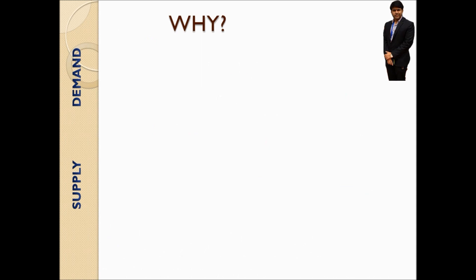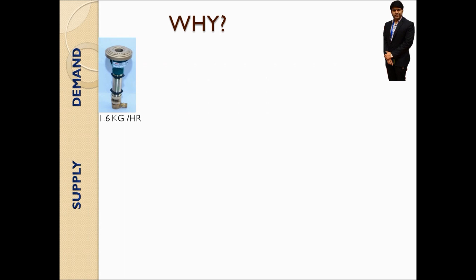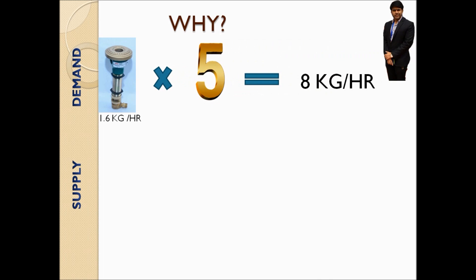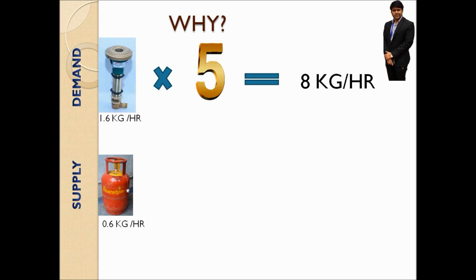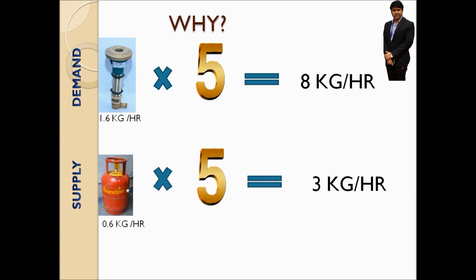I will explain this phenomenon with the help of an illustration. Assume there is a restaurant using a CD5 burner with a consumption of 1.6 kg per hour. If you use 5 such burners, the total consumption would be 8 kg per hour. Now, the vapor rate of a cylinder is 600 grams per hour, and if a gas mechanic has installed 5 such cylinders, the supply of gas will be 3 kg per hour.